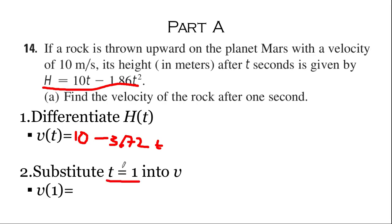Now we're going to substitute 1 into this function here, so we have 10 minus 3.72, and that equals 6.28 meters per second. We put the 1 in place of t, so 3.72 times 1 is just 3.72, and 10 is just a constant, so 10 minus 3.72 is 6.28.